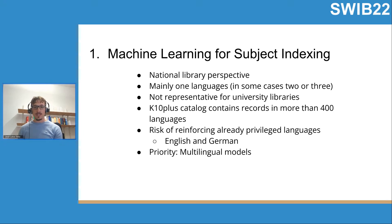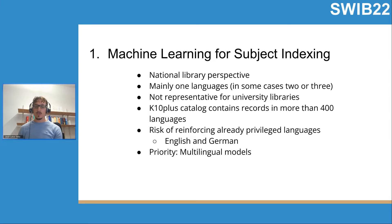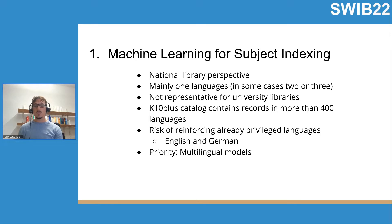National libraries are a very special kind of library, and in some cases have a very specific perspective. The majority of national library records are in one language, or perhaps two or three languages. This is not representative for many other kinds of libraries, such as university libraries. In the catalogue of the library network where my library belongs, we have records in more than 400 languages. We consider that there is a certain risk of reinforcing already privileged languages, such as English and German, when we apply machine learning.